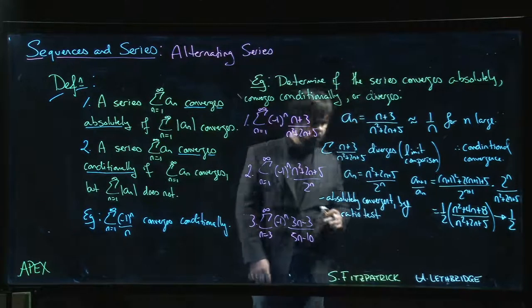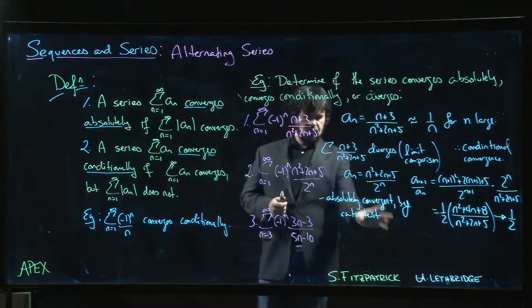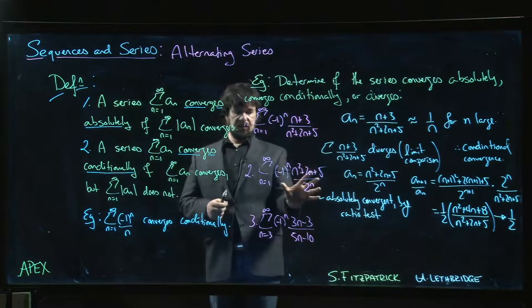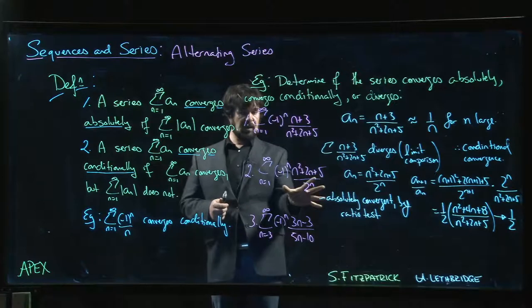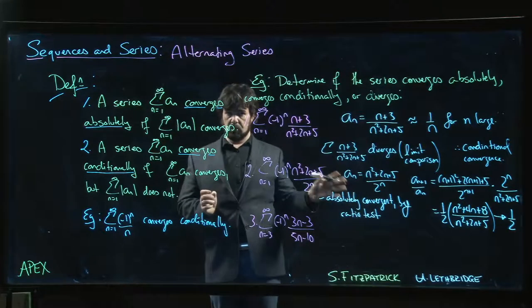Frequently when we're applying the ratio test, we often use it as a test for absolute convergence. So if we do have sign factors to deal with, we just take the absolute value when we apply the ratio test. You're going to see that in the next section when we talk about power series.